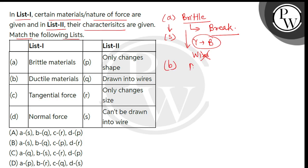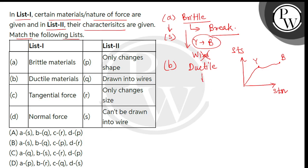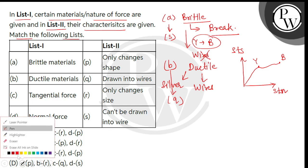Checking for second entry, that is for the ductile material. अगर ductile material का हम stress-strain curve draw करें — stress y-axis पर और strain x-axis पर — तो हमें एक graph मिलेगा जिसमें yield point और breaking point के बीच large gap है। इसी large gap के कारण इन्हें wire form में draw कर सकते हैं। For example, silver. तो B entry match होती है entry number Q से.